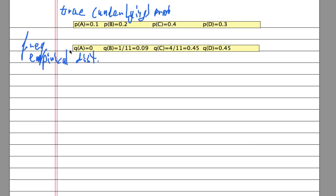The empirical distribution or the frequencies from actually spinning the wheel, those come out to - the P hat or Q here - of A is equal to 0, for B it's 0.09, for C it's 0.45, and for D it's also 0.45. So clearly there is some relationship here between these numbers.